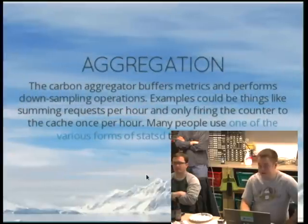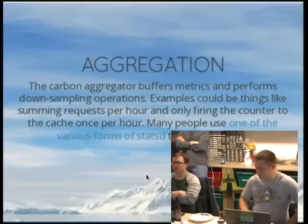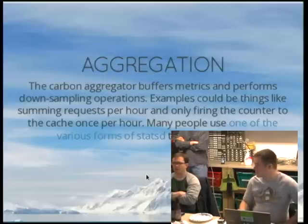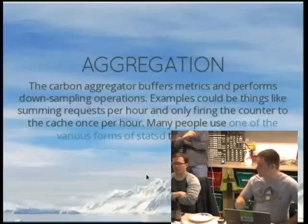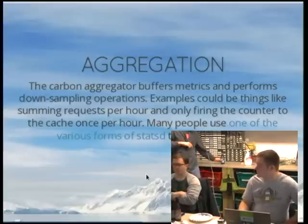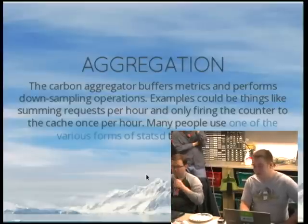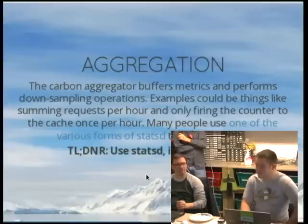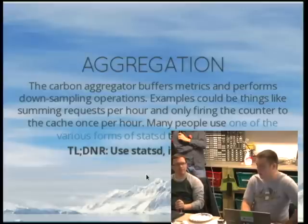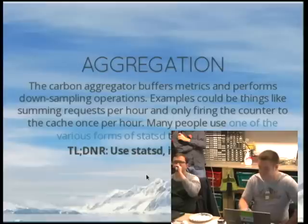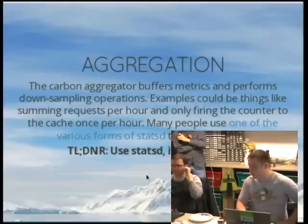Carbon also has an aggregation function. Say you have Apache logs you're parsing with a tool like Logster and it fires a Graphite event for every single request — but you don't want every request to be a data point. You want every minute's worth of requests to be a data point. So you'd fire them into an aggregator like Carbon Aggregator or StatsD. Honestly, StatsD has a lot more features. I just use StatsD instead. And there are about a million forms of StatsD — Ruby, Python, C, Go, Erlang, Java. Pick one that you like and use it. StatsD is awesome.